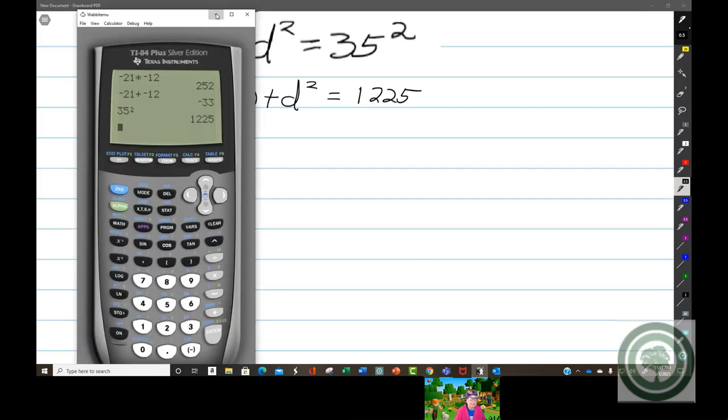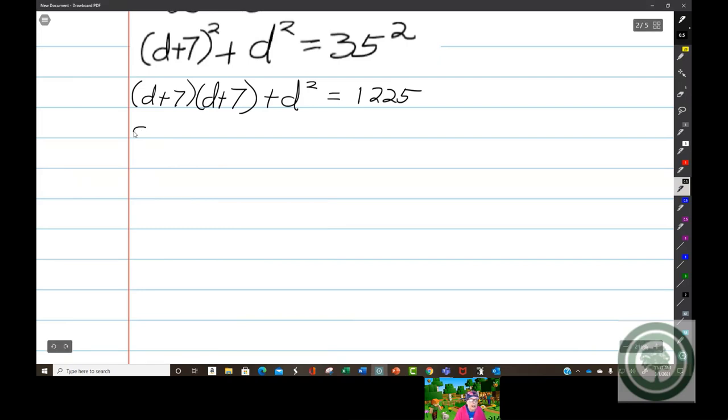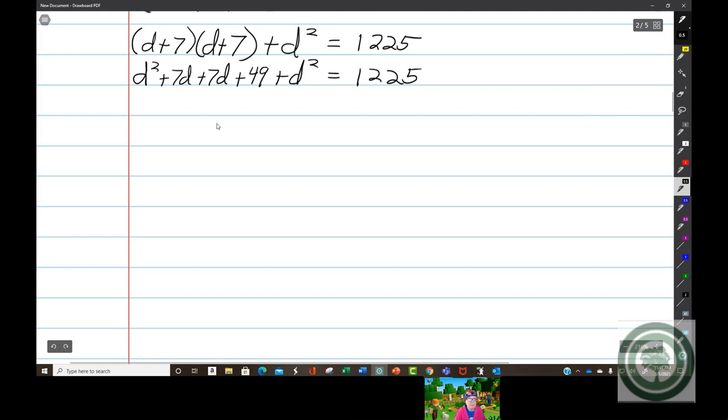We're going to have d squared plus 7d plus 7d plus 49 plus d squared equals 1225. D squared plus d squared is 2d squared, and 7d plus 7d is 14d plus 49 equals 1225.